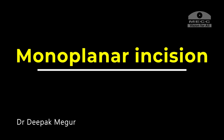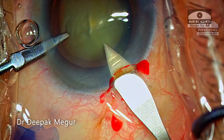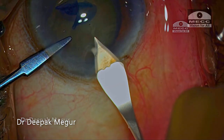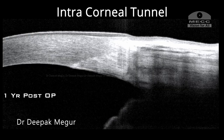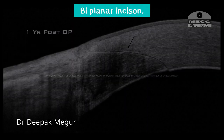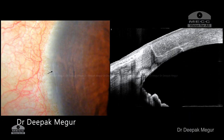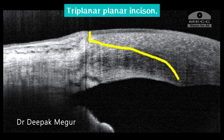Lastly, in the monoplanar incision there is no initial perpendicular groove. The sharp keratome simply traverses through the cornea creating an intercorneal tunnel, and without any change in direction of the blade it enters the anterior chamber. If we have a reasonable intercorneal tunnel, all configurations — whether monoplanar, biplanar, or triplanar — will work equally well. But my personal preference has always been the triplanar incision because I feel it is much more secure.